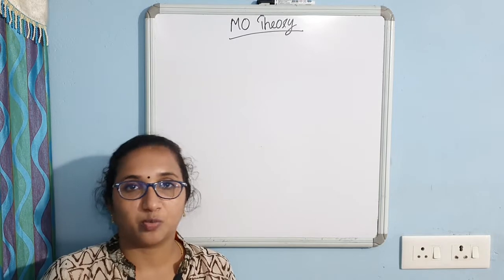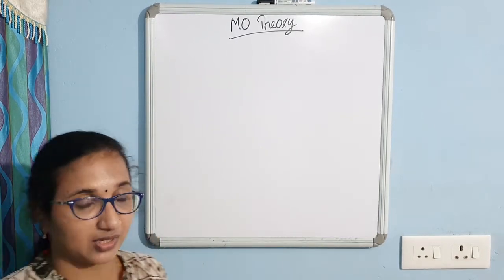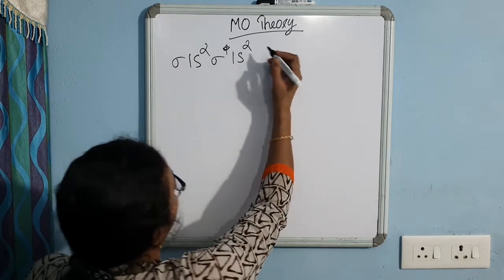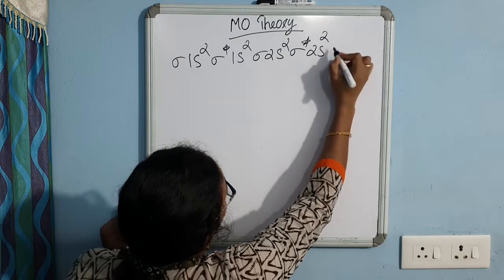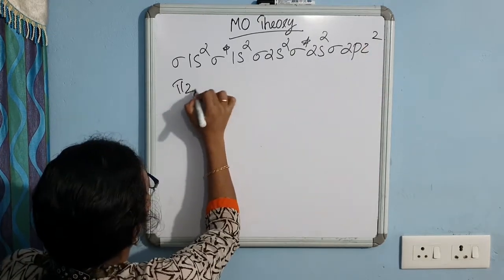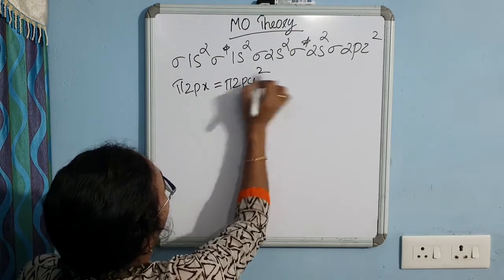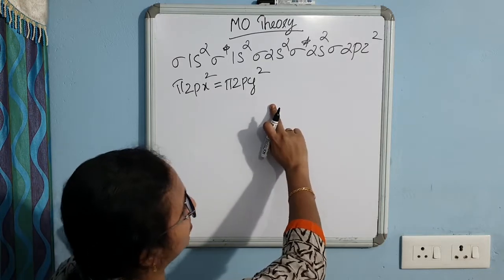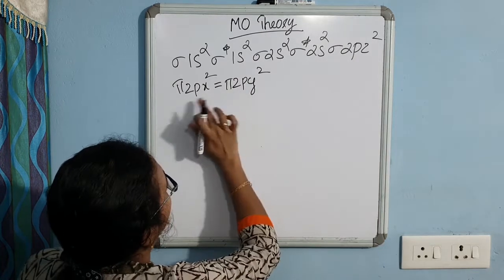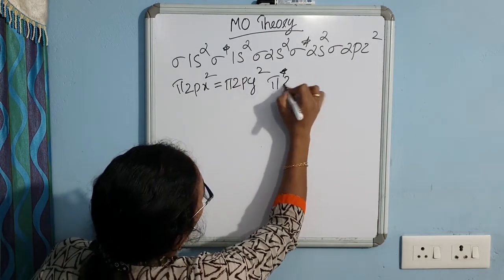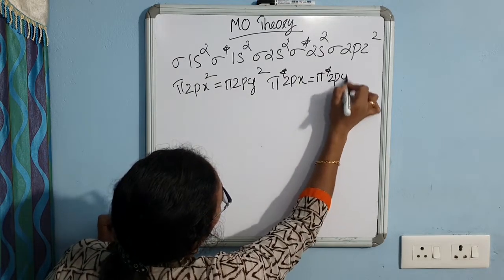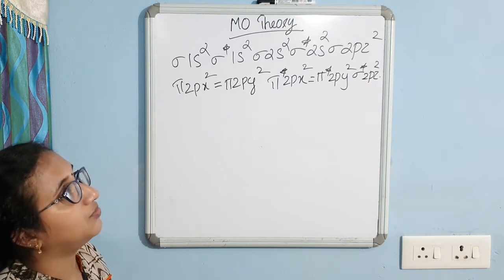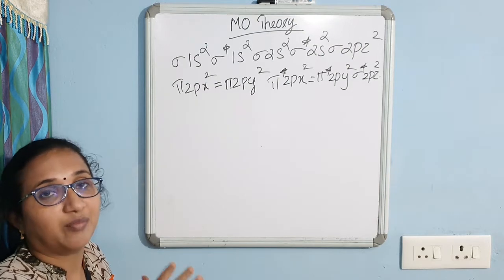Let us now see the molecular orbital configuration for systems containing more than 14 electrons. There is only one key difference: in the case of more than 14 electron systems, after sigma* 2s, sigma 2pz comes first, and only then pi 2px and pi 2py. So the order is: sigma* 2s, sigma 2pz, pi 2px = pi 2py, pi* 2px = pi* 2py, sigma* 2pz. This is the MO configuration for molecules containing more than 14 electrons, and based on this rule we can discuss the MO diagram for different systems.